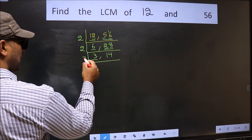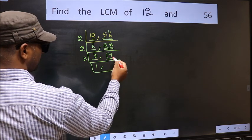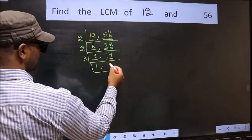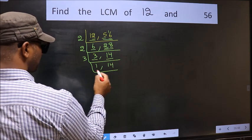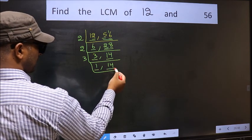Now here we have 3. 3 is a prime number so 3×1 is 3. The other number 14 not divisible by 3 so we write it down as it is. Now we got 1 here. So focus on the other number 14.